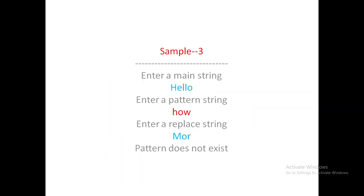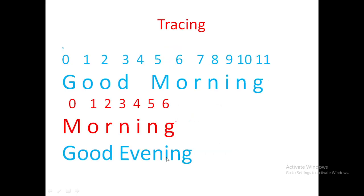In sample three, when you run the program, the main string is 'hello', the pattern string is 'how'. 'How' is not at all present in 'hello', but the program will still read all inputs and ask for the replace string - I'll give 'mor'. Since 'how' is not present in 'hello', the program should display 'pattern does not exist'. This is how the program works.